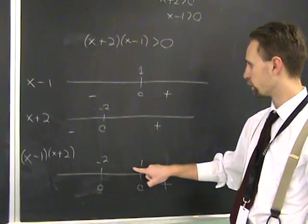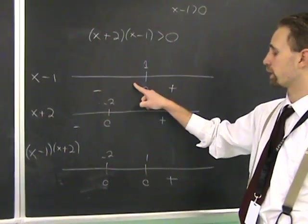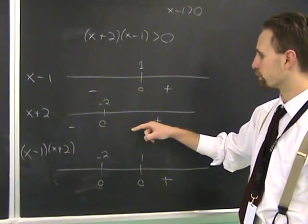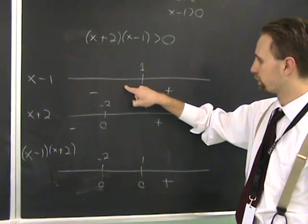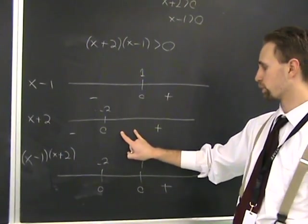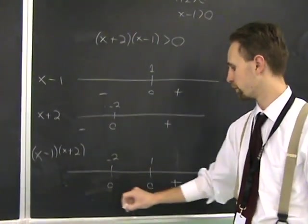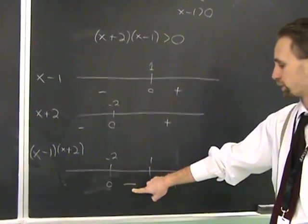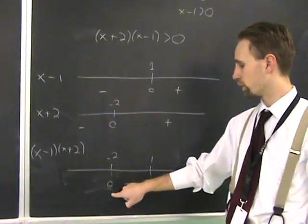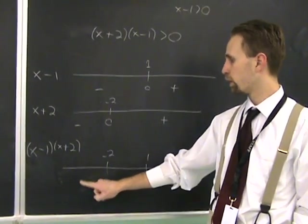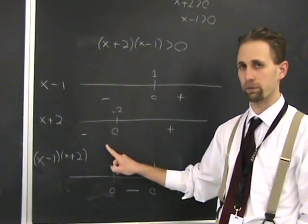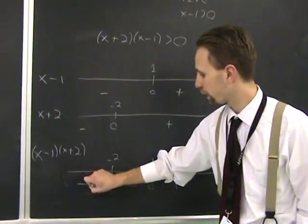When you cross over 1, you see this factor changes sign. And so now, it's negative in this region. This thing, this one will still be positive. So you'll have negative times positive, which is negative. It's going to change the sign. Then when you go past minus 2, both of the factors are negative. So their product is going to be positive again.